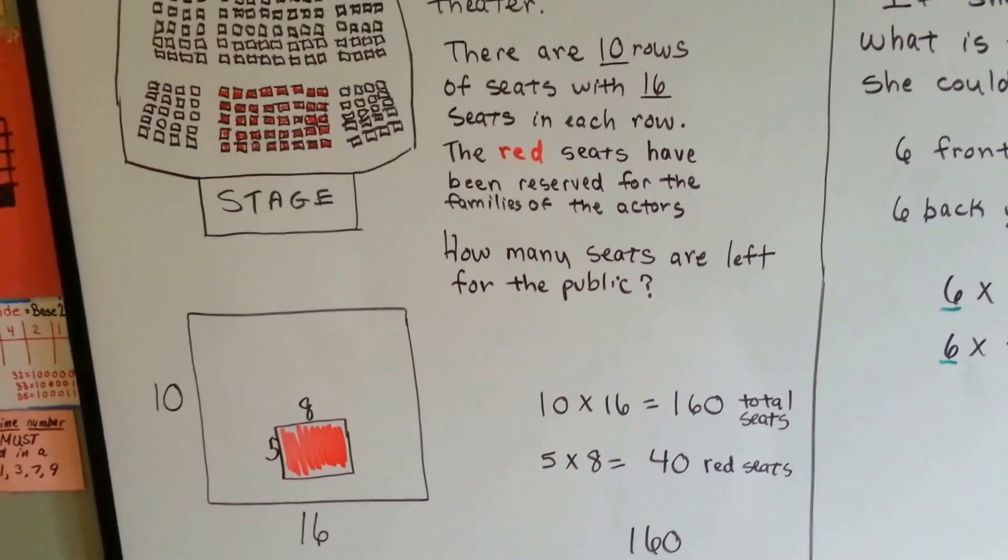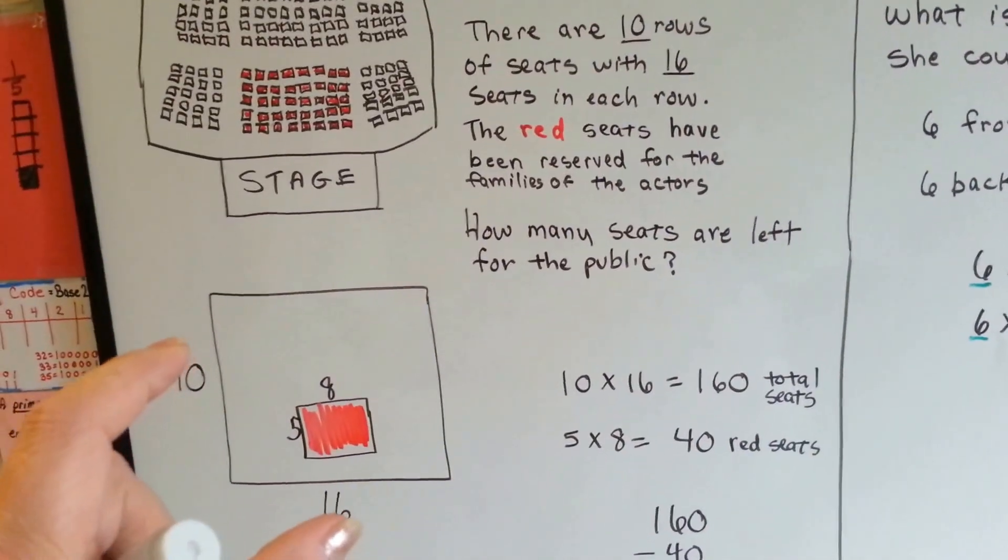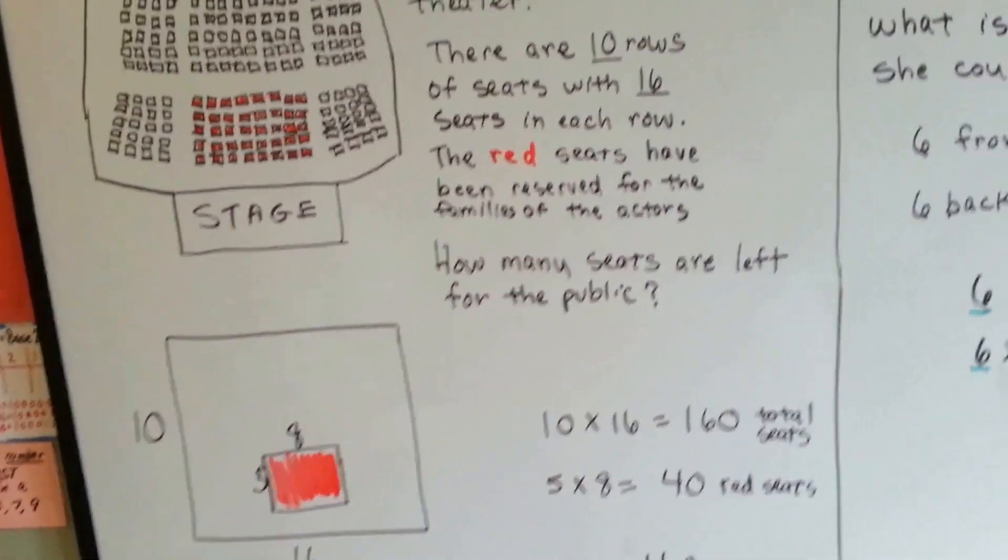You see how we did that? That wasn't that hard, was it? No. We did the big multiplication and then we subtracted from that.